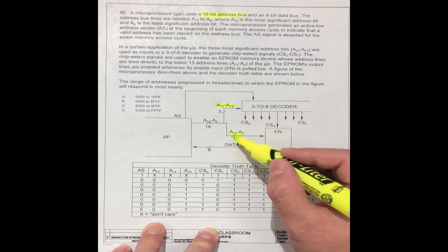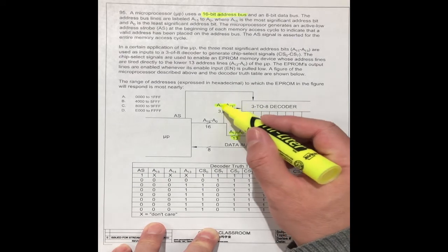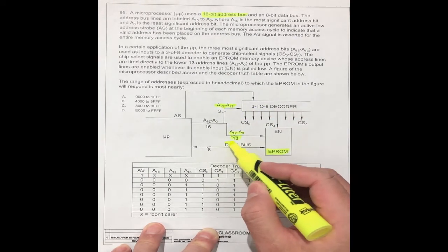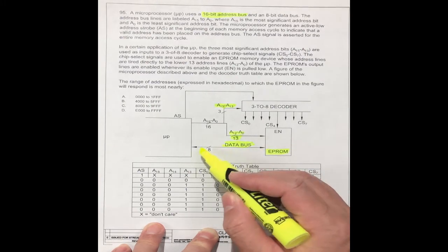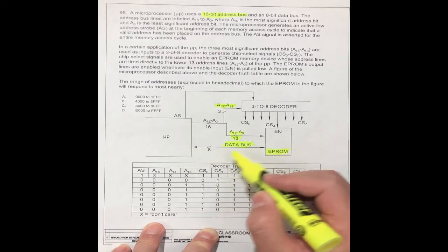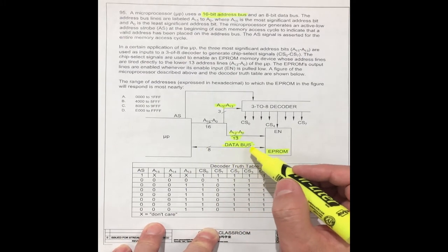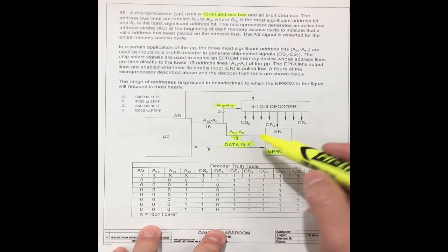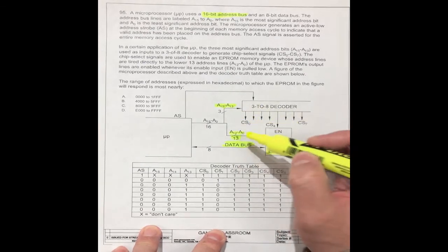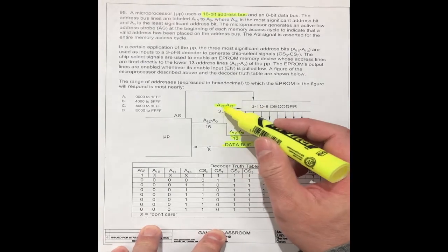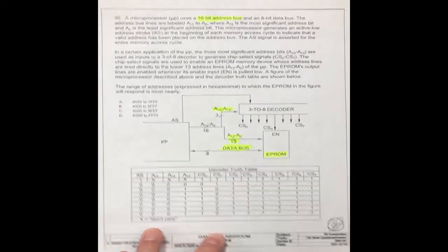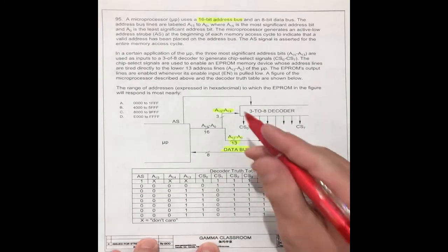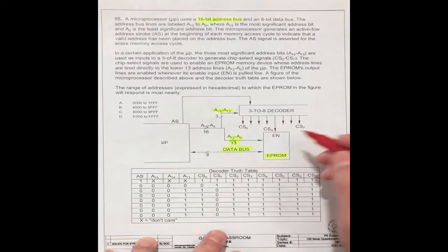The address is only for the lower lines plus the chip select. Because the data bus is for input or output — it is not the address. So we only need to consider the 13 lower address lines plus the 3 upper bits for the full address calculation.